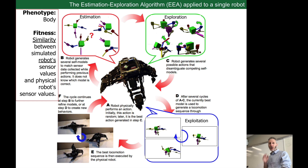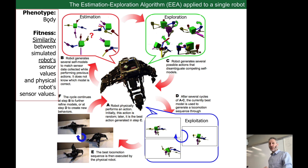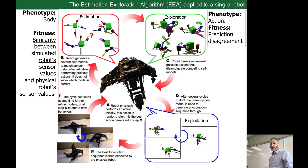The exploration algorithm is exploring its own body, but not randomly — it explores in a non-random fashion. The physical robot looks for what action to perform next by finding the action that, when supplied to all its current guesses about how it's put together, causes those self-models to disagree in their prediction about what would happen if that action was performed on the physical robot.